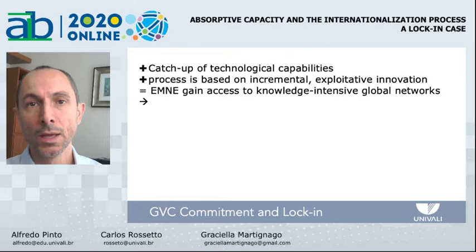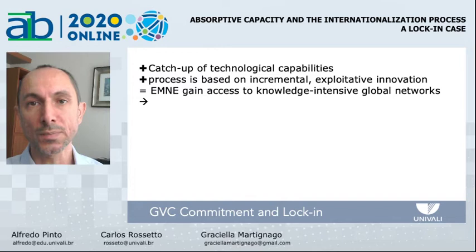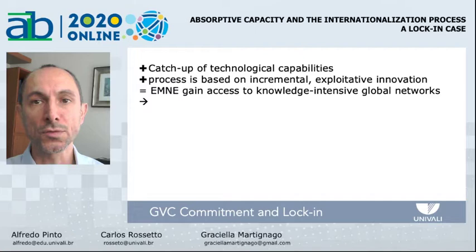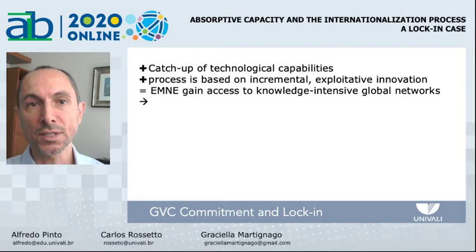The catch-up of technological capabilities to increase commitment to the automotive network required a deep level of formalization expressed in engineering integration routines, often based on incremental innovations of products and processes — essentially exploitative innovation. The necessary technological catch-up process followed by ZEN resembles the paradox between core capabilities cultivation and core rigidity formation. Companies which invest heavily in catching up technological capabilities mostly rely on incremental innovation in products and processes to gain access to global markets.